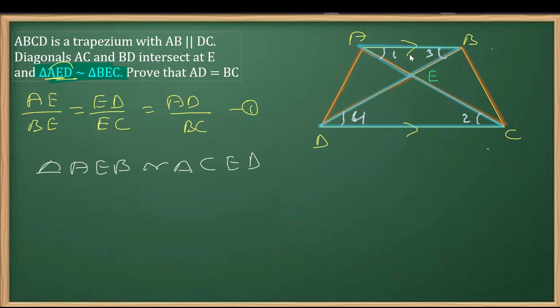From this similarity, the proportionality we get is AE over CE equals BE over ED. CE and EC are the same, so AE over EC equals BE over ED. I'm marking this as equation 2.